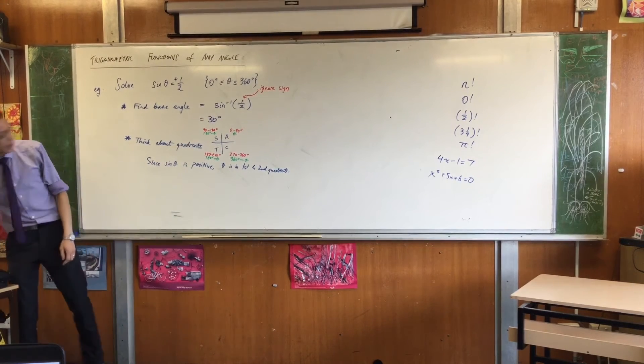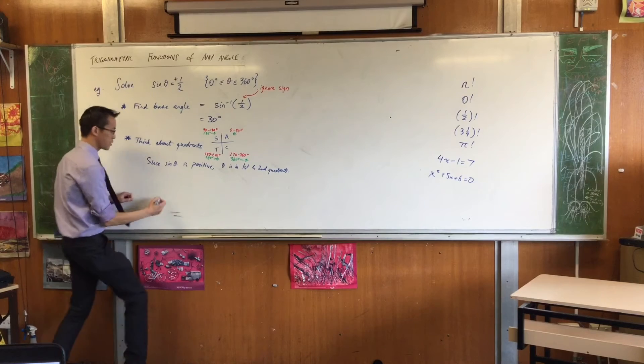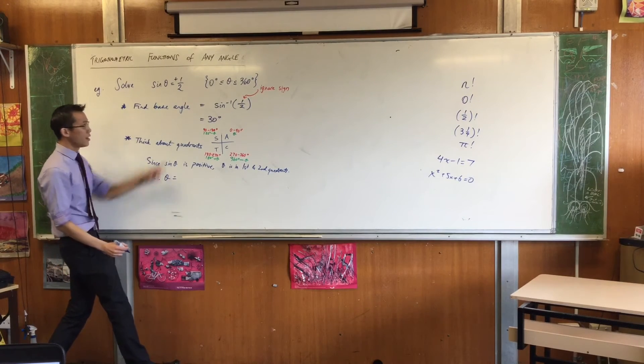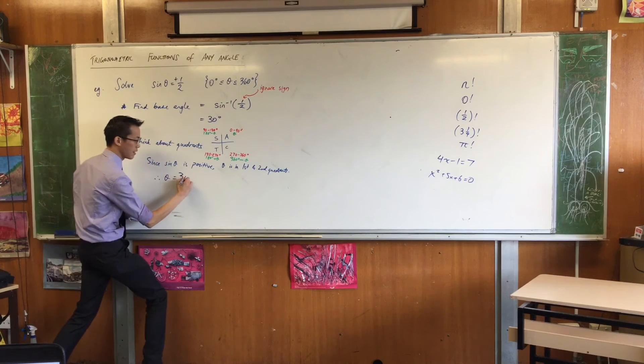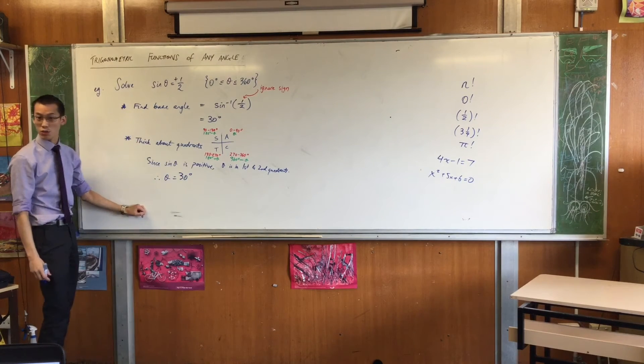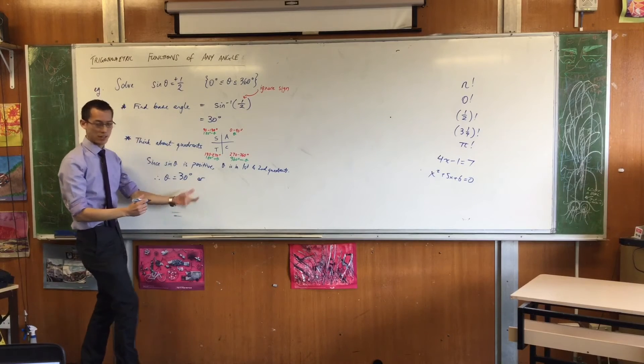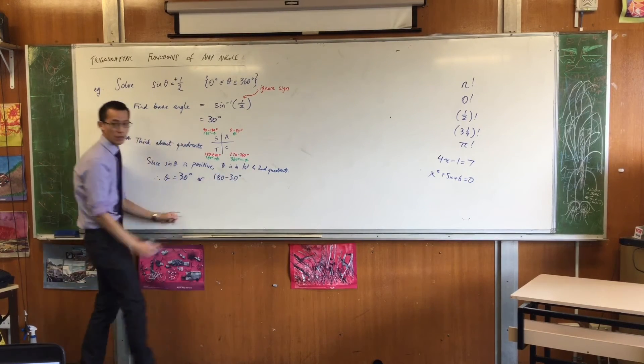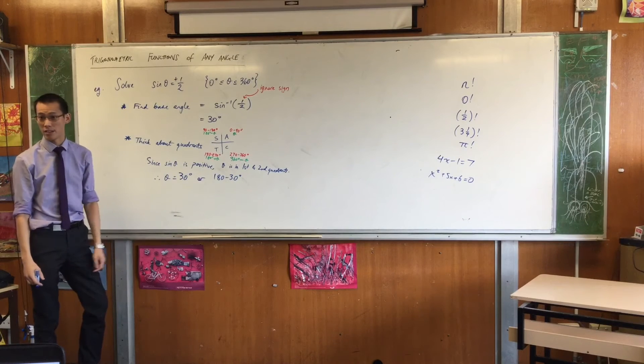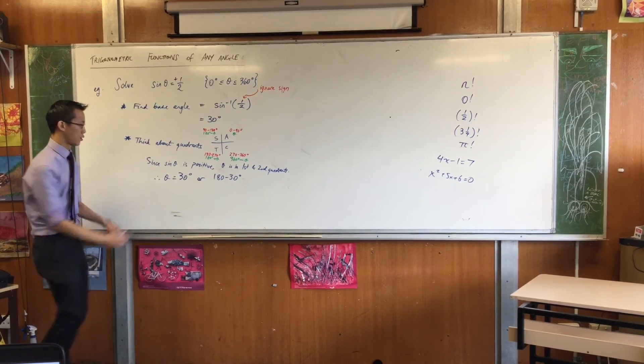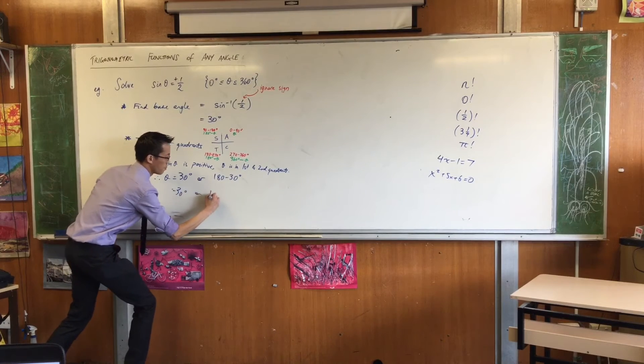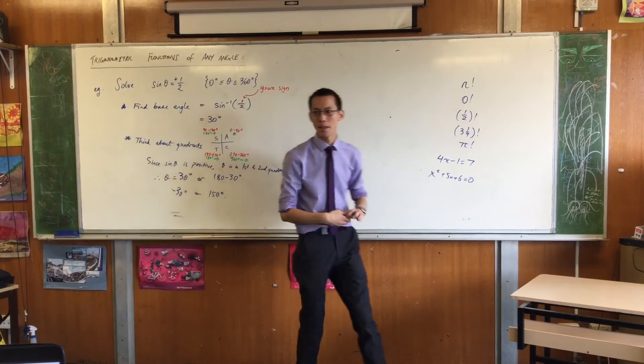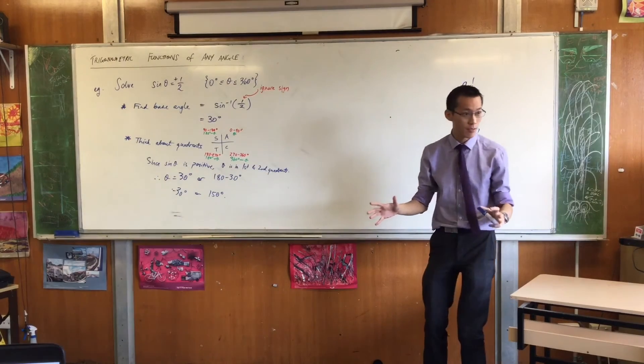Now you hopefully identified for me it's first and second quadrants. So you would say therefore theta equals, firstly, 30 degrees. That's my first quadrant solution. Or, and I even write this just so I don't mark it up, 180 minus 30 degrees. That's my second quadrant answer. Okay? So I'll just simplify that. Full stop, done. How do you feel about that? Is that okay? Feeling comfortable? Okay.